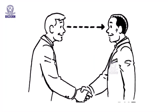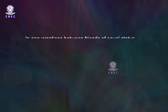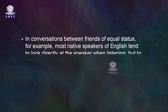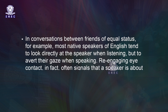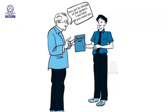Eye contact. One important non-verbal behavior is eye contact — the extent and timing of when a speaker looks directly at the eyes of the listener. In conversation between friends of equal status, most native speakers of English tend to look directly at the speaker when listening but avert their gaze when speaking. Re-engaging eye contact often signals that a speaker is about to finish a turn and is inviting a response. However, conversations follow different rules when they involve someone of greater authority talking with someone of lesser authority.